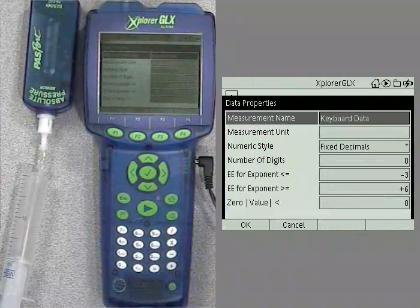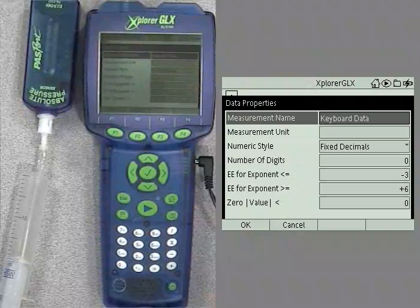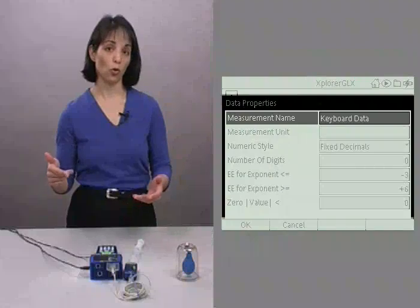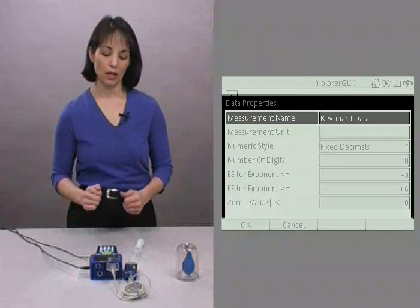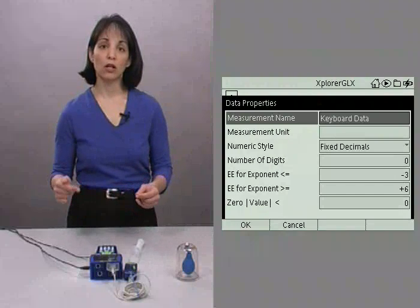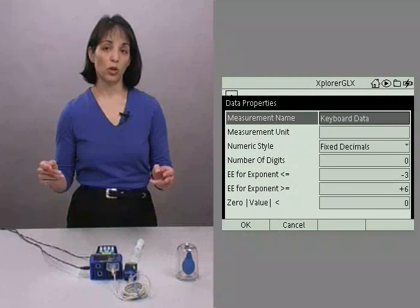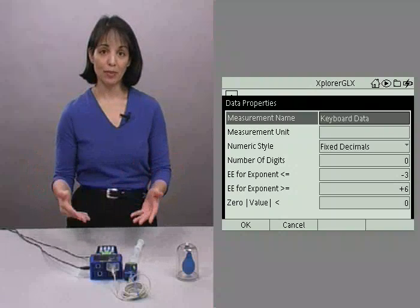As soon as you do, a new screen opens up, data properties. And if you look at the measurement name for that data properties, it's keyboard data, or in our case, keypad data. This is where we tell the Explorer GLX that we want to enter volume via the keypad.